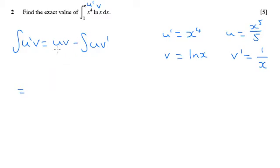So we're going to get uv first of all, so that's this thing here, x to the 5 over 5 times ln(x), minus the integral of uv dash, which is these two things times together.